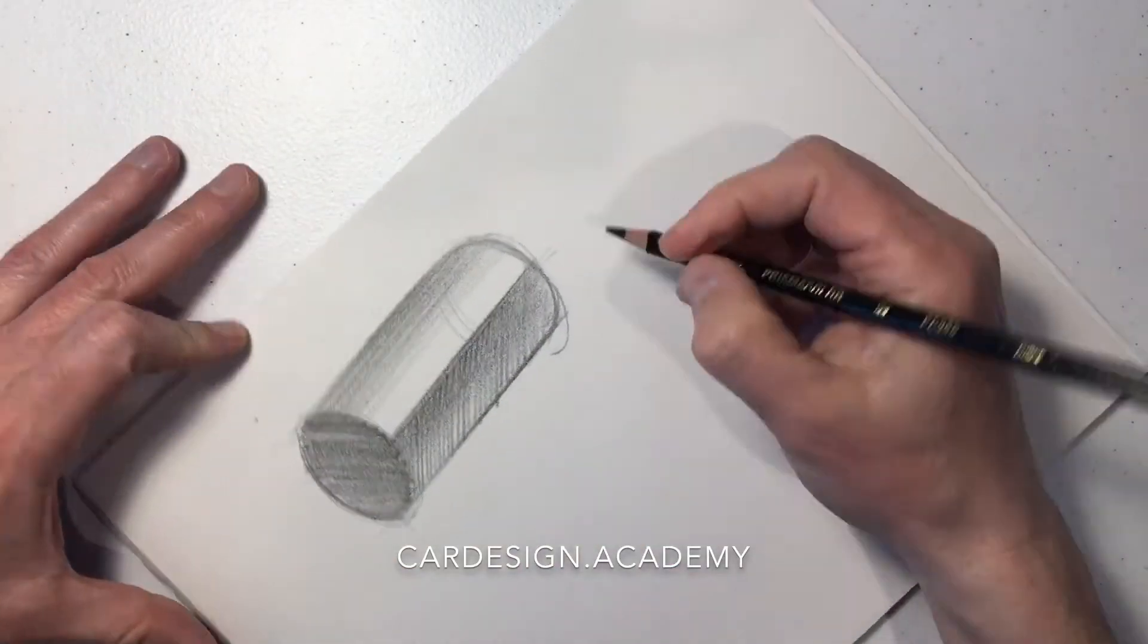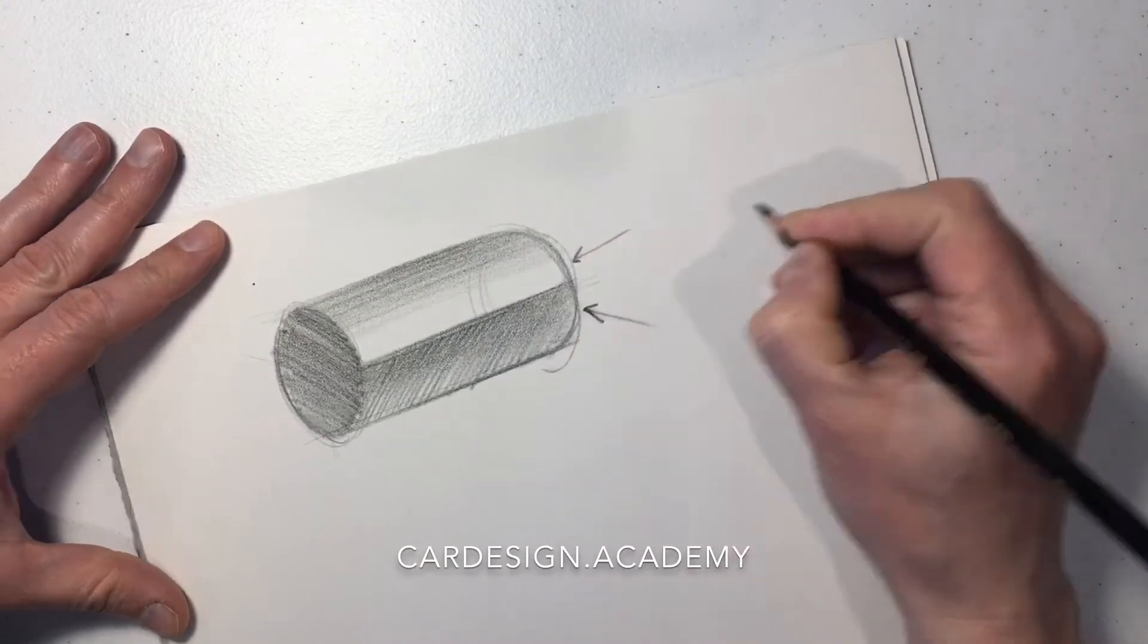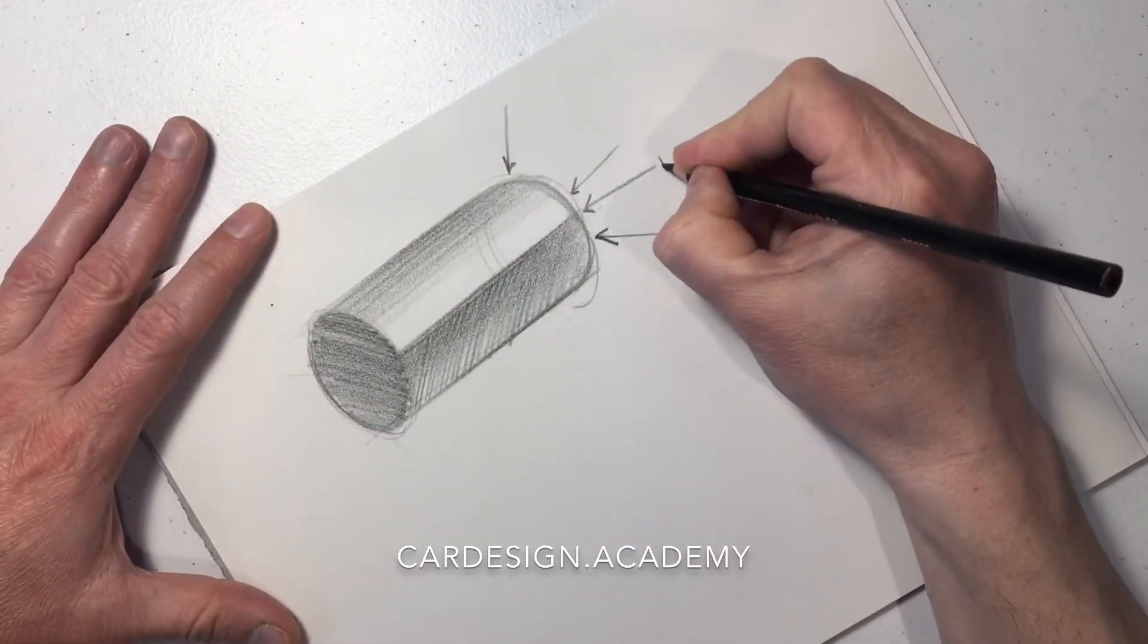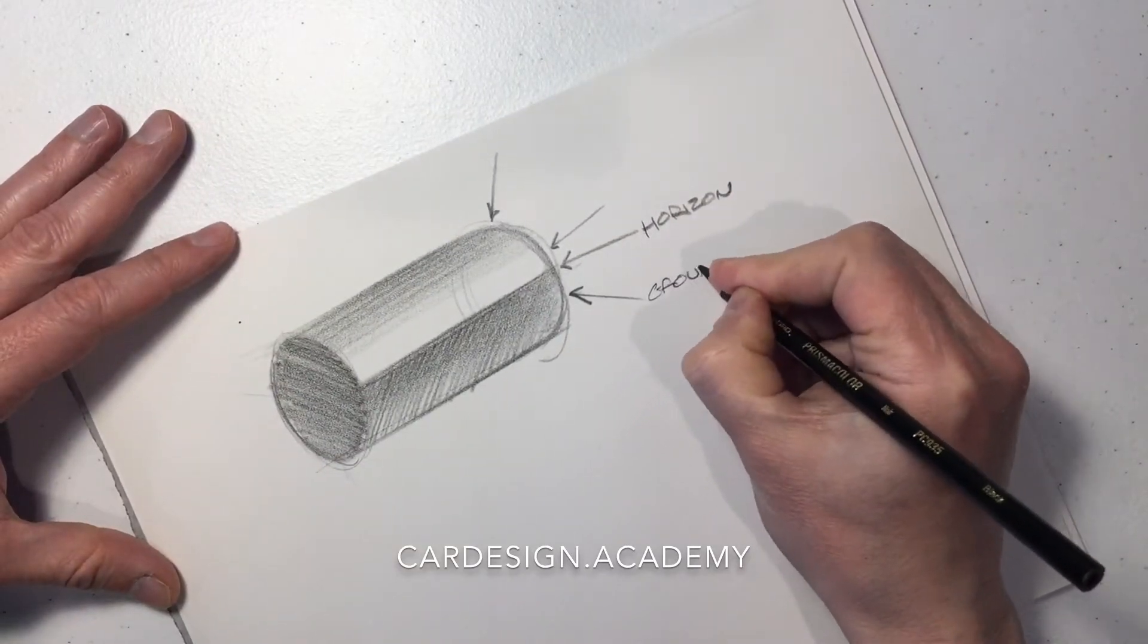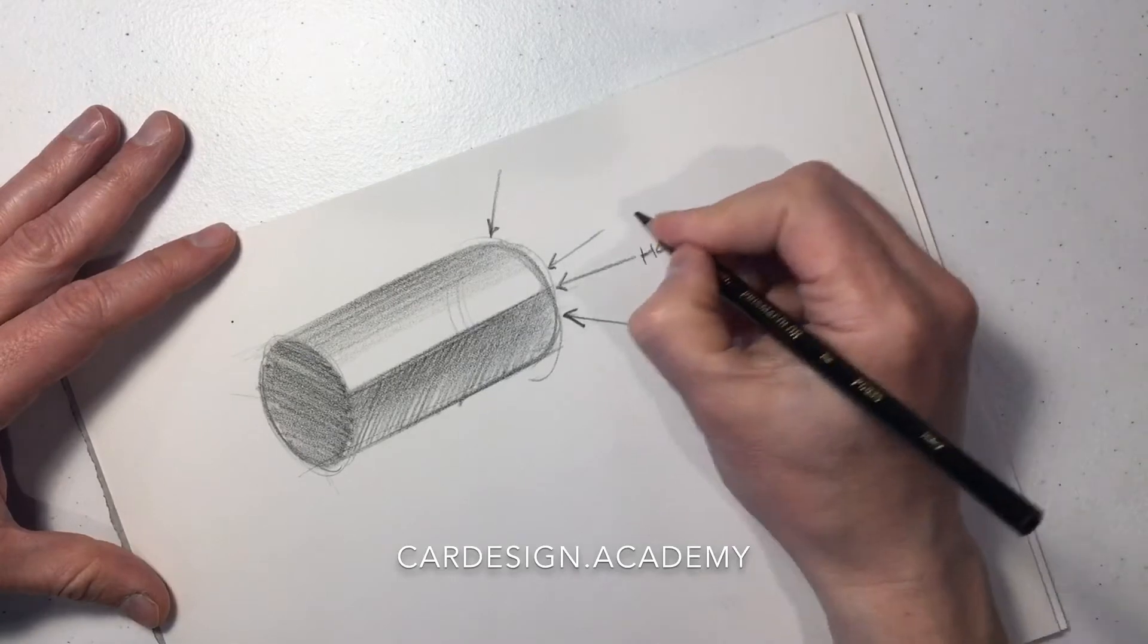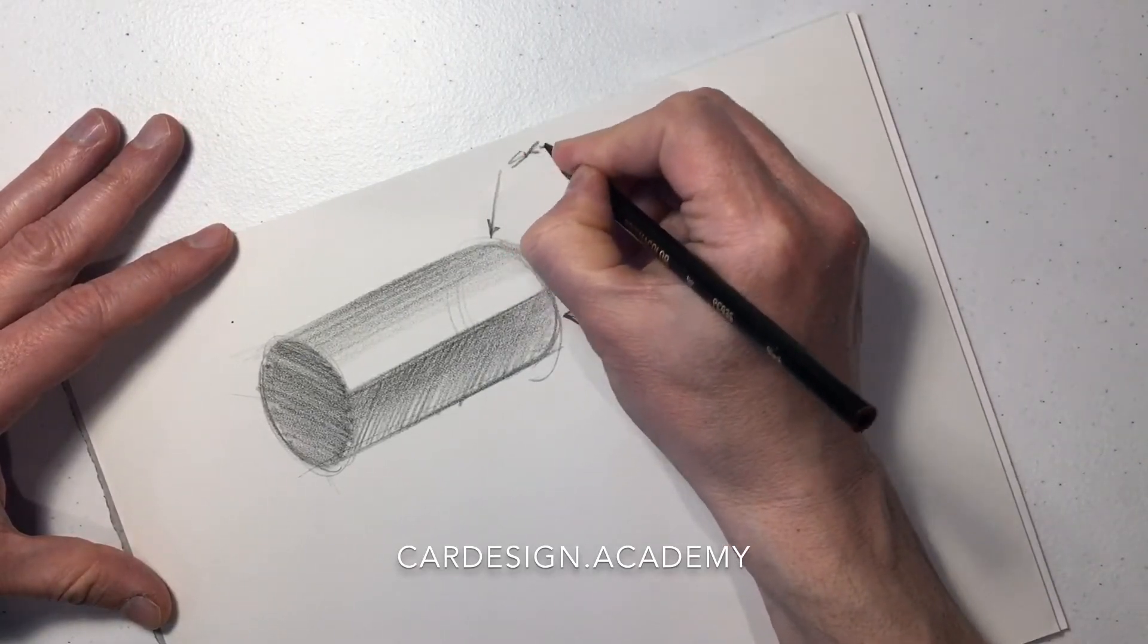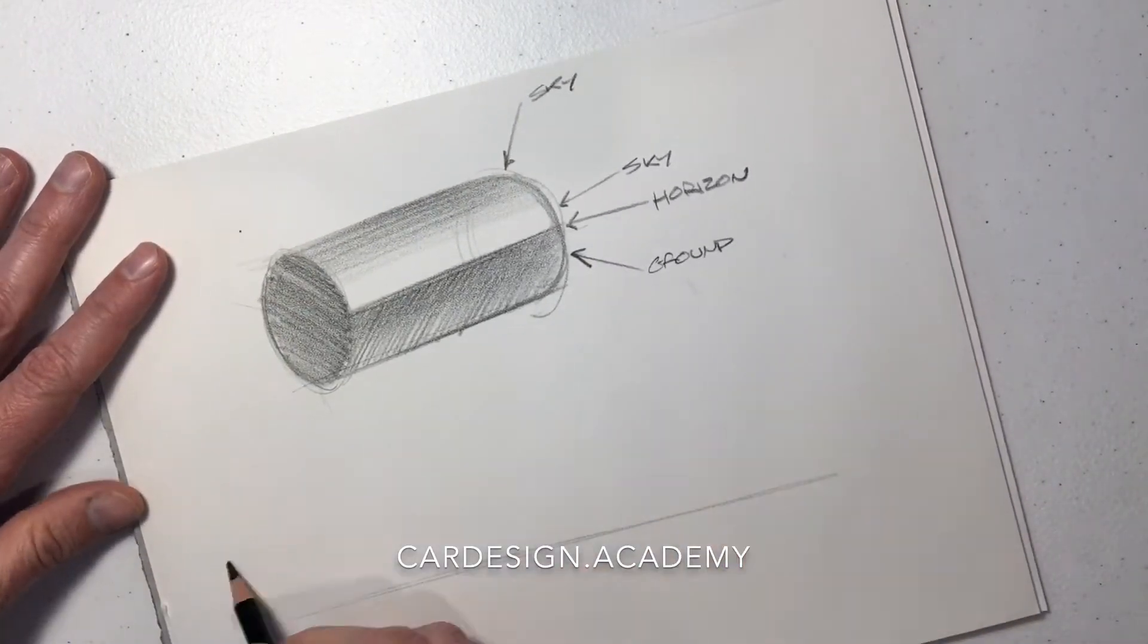Drawing arrows that represent where each part of that cylinder is pointing. We have the horizon line, we have the ground tone, we have the sky tone near the horizon which is almost white, and then we have the sky tone at the very top which is a deeper blue.